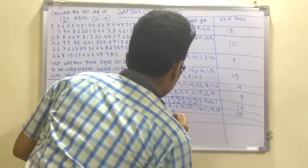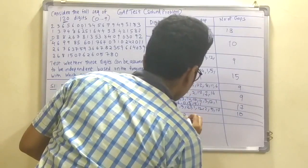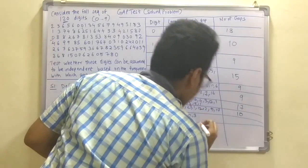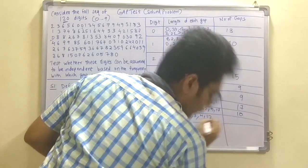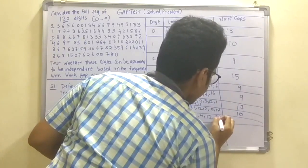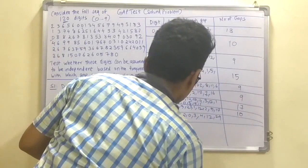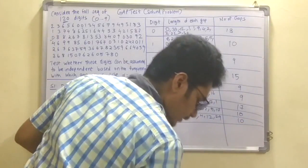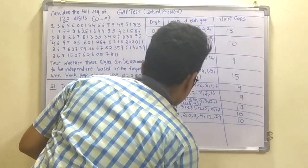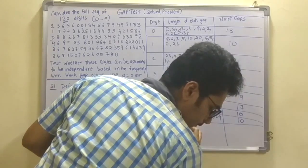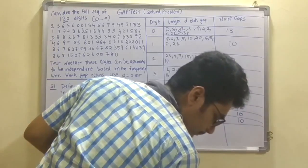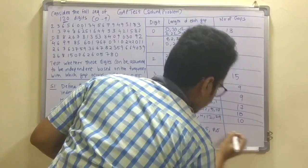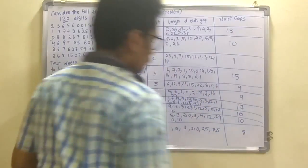For digit 8, the gap lengths are: 5, 13, 2, 0, 3, 4, 12, 29, 12, 10. The total number of gaps for digit 8 is 10. For digit 9: 3, 3, 3, 0, 25, 8, 5. The total number of gaps for digit 9 is 8.